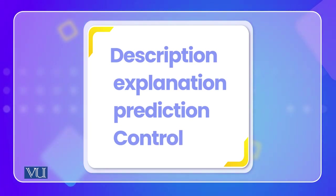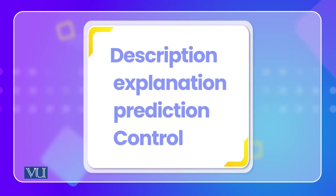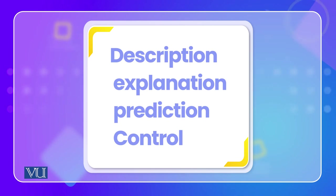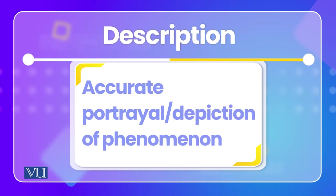The four goals are: Description, Explanation or Interpretation, Prediction, and Control or Manipulation. Description is an accurate portrayal or depiction of a certain phenomenon.